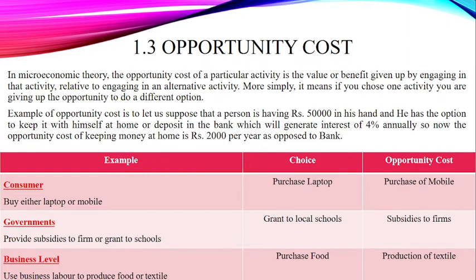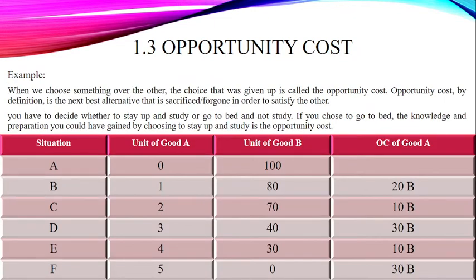From the business point of view, a business also has two options: either to use its labor to produce food or to produce textile products. If they prefer to use the labor to produce food, then the production of textile would be their opportunity cost. Similarly, if you have options to either watch a football match or a cricket match and you prefer to watch the football match, then the cricket match would be your opportunity cost.